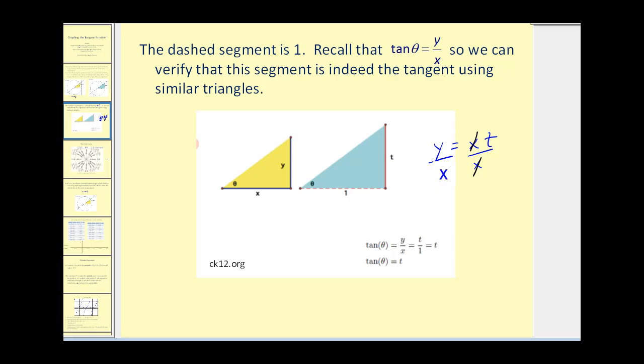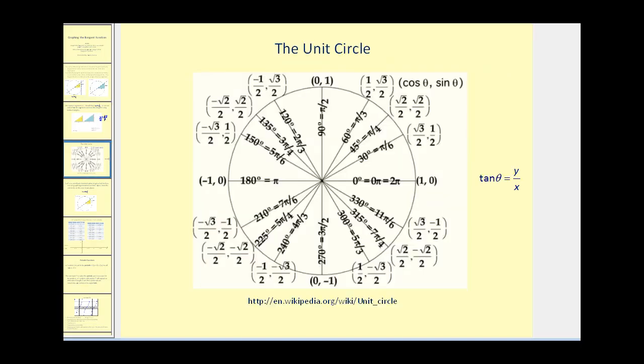Now let's take a look at the unit circle. Remember that on the unit circle, tangent theta equals the ratio of y over x. To find function values, we take each of these ordered pairs, take the y coordinate and divide by the x coordinate, and that would be another way to find tangent function values.